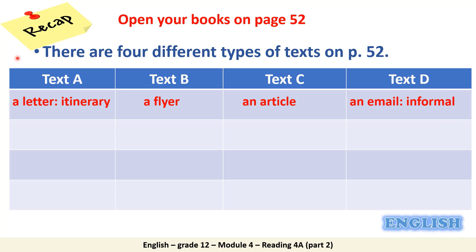Now I'm going to tell you about some features and you're supposed to match the feature to the appropriate text. Which text gives facts about a certain topic? It is text C, the article. Articles give factual information about different topics.